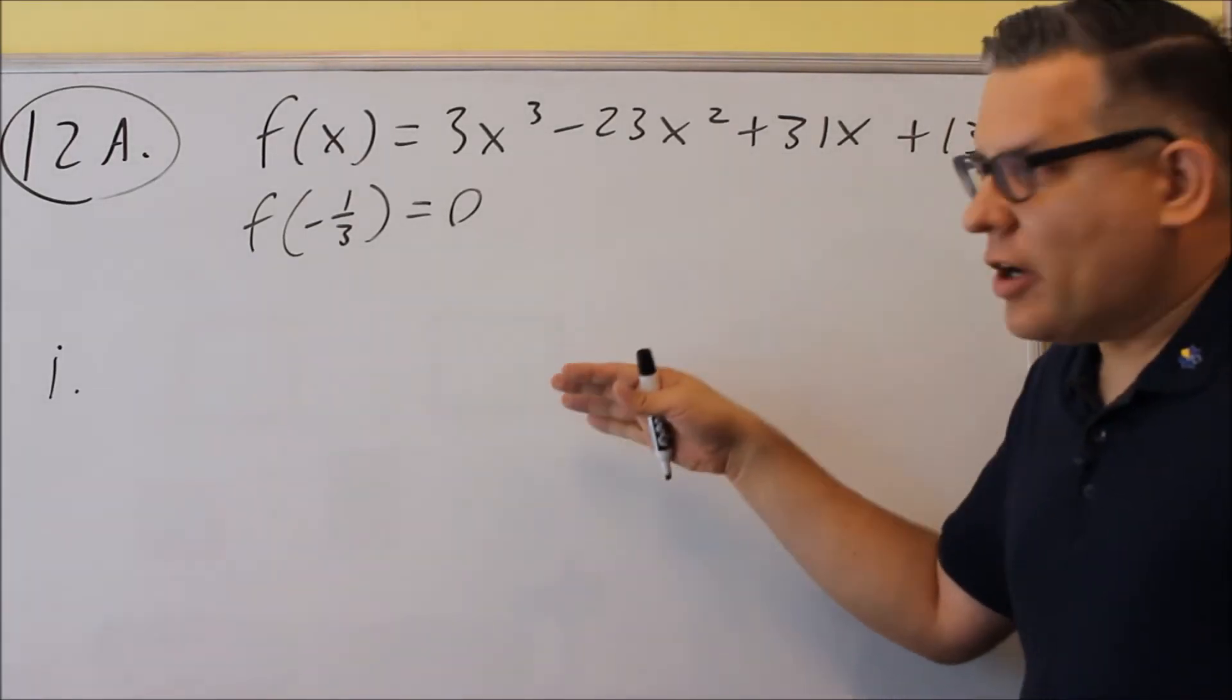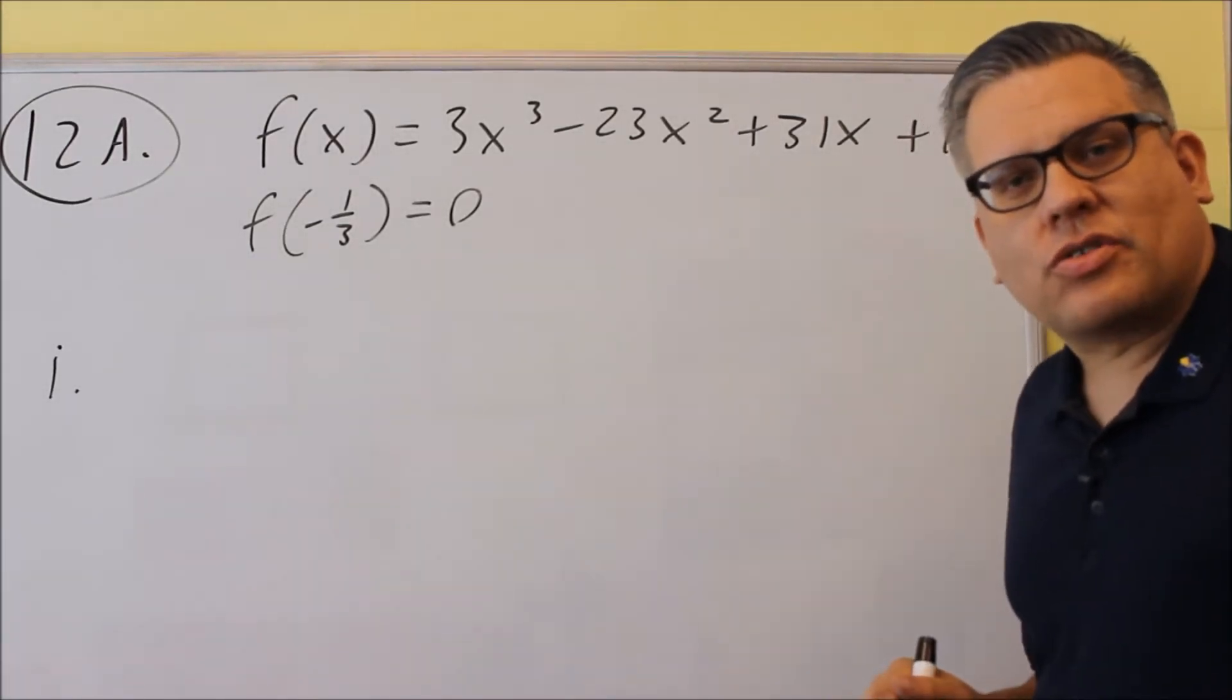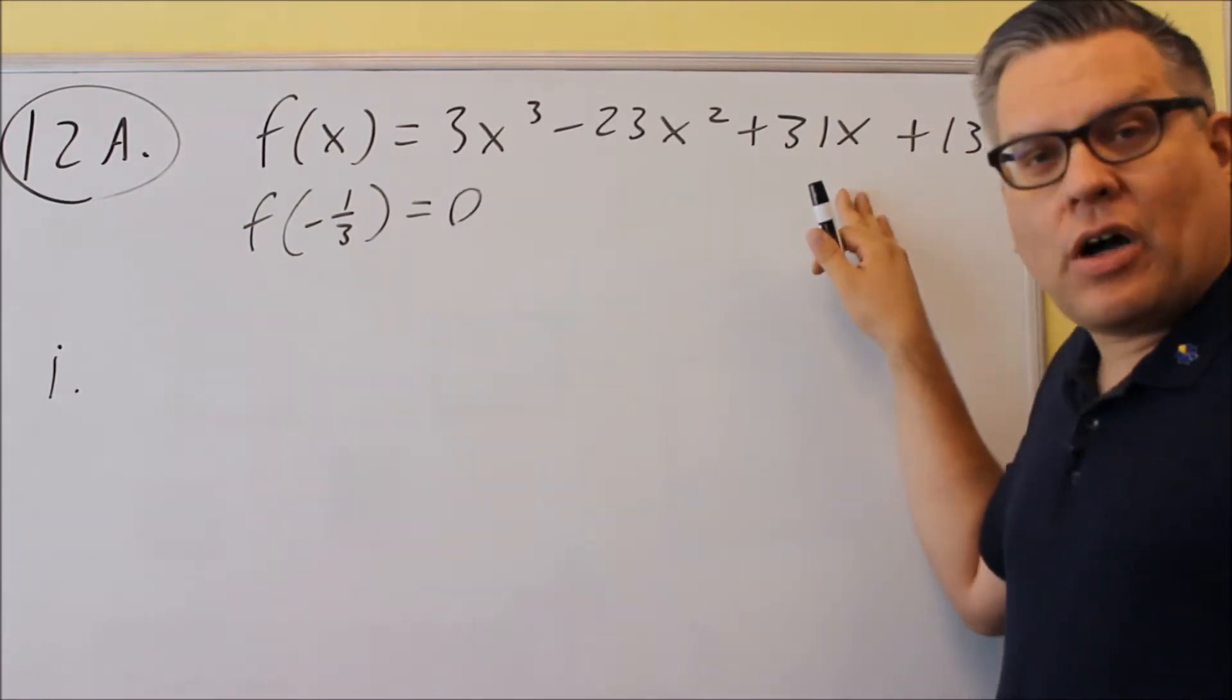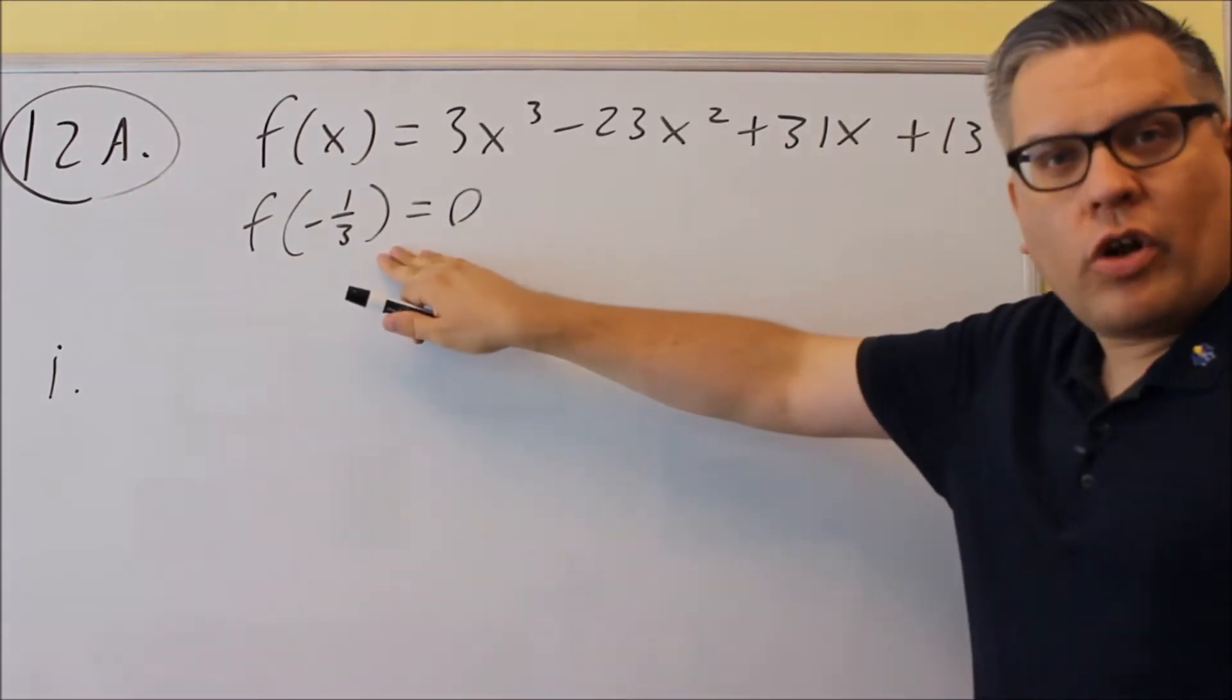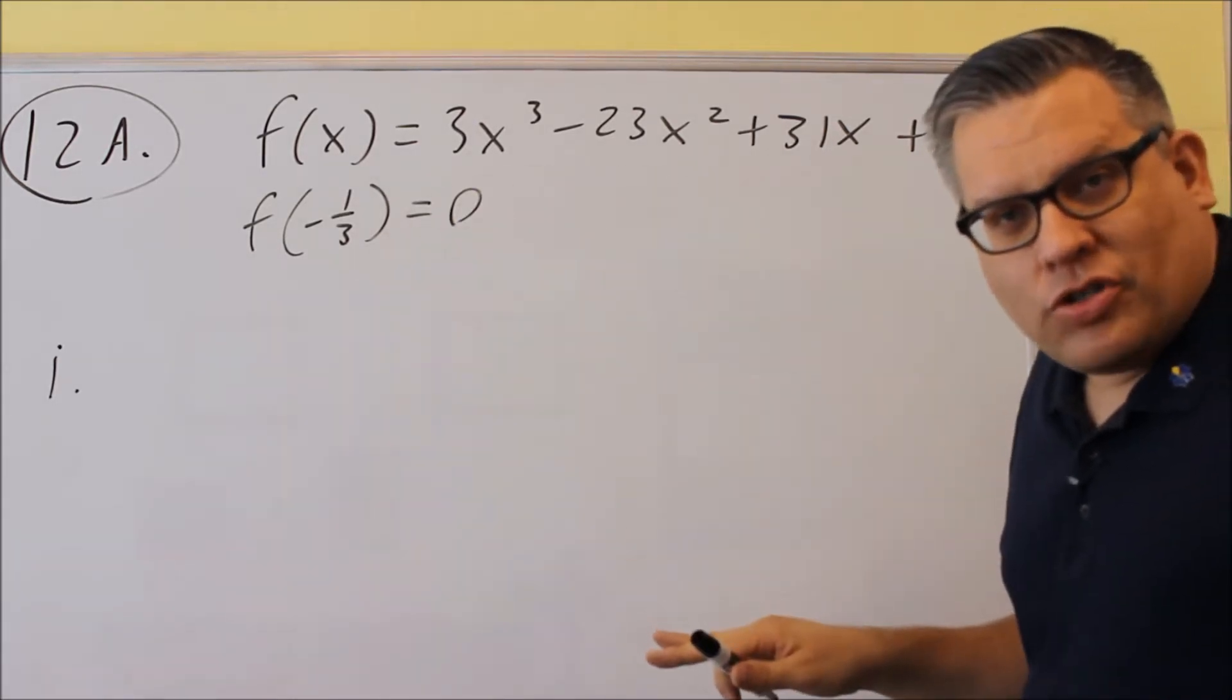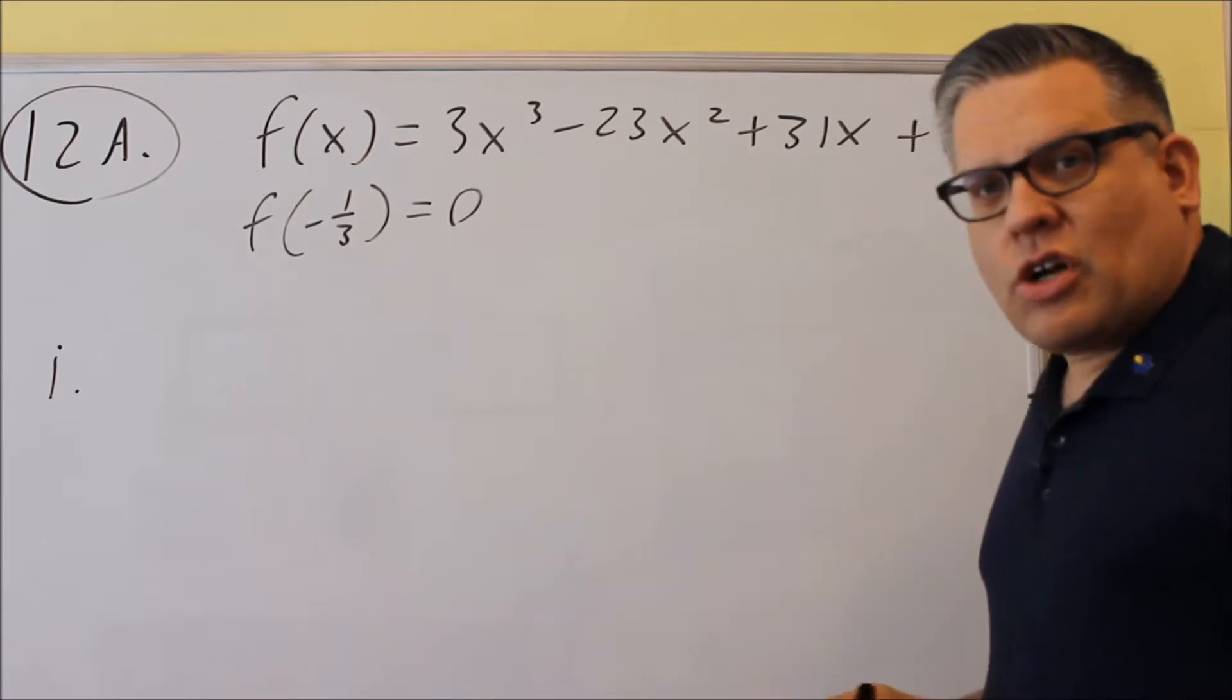Okay, number 12 is going to have three parts. The same three parts that you see in the sample test are the same ones that will be on the actual test. You're going to be given a polynomial, and you're also going to be given one of the zeros. This piece of information here we're going to use in part two. So part one, let's start with that.